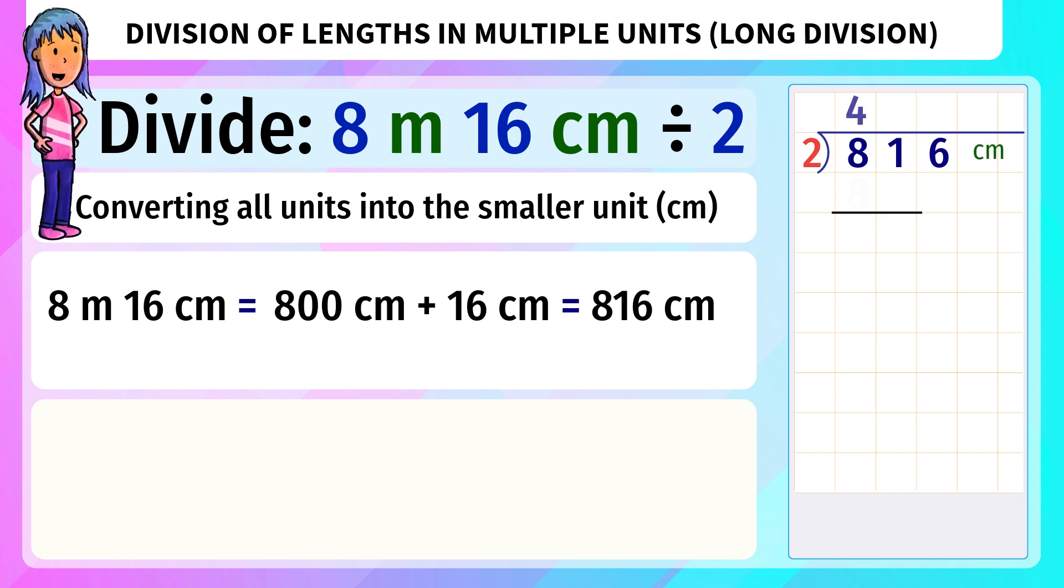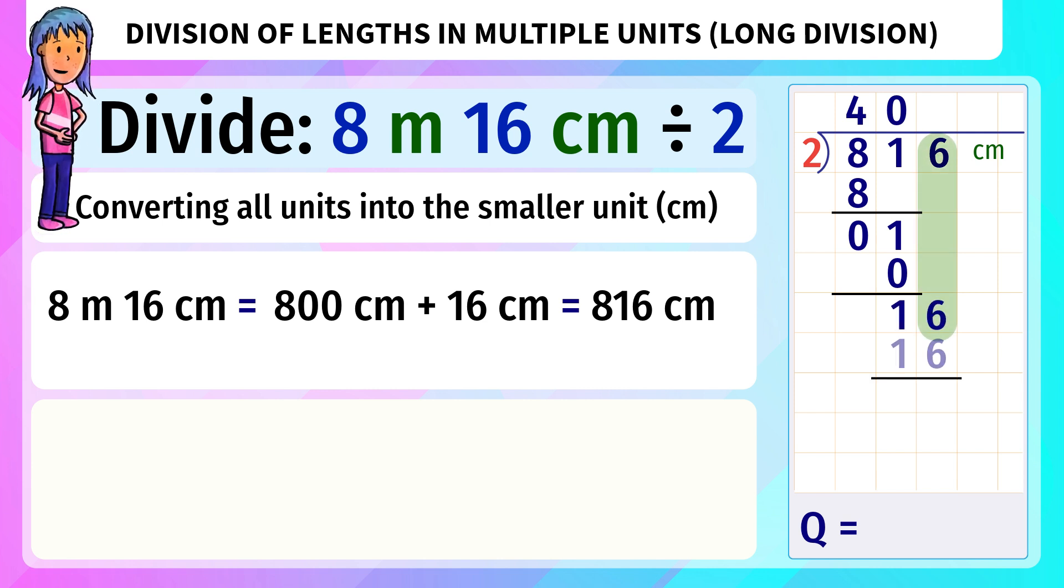Two 4s are 8, remainder 0. 1 comes down. 1 is less than 2. Two 0s are 0. Subtracting, we get 1 minus 0 equals 1. 16 divided by 2 equals 8, remainder 0.